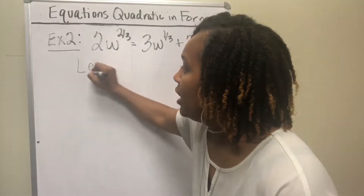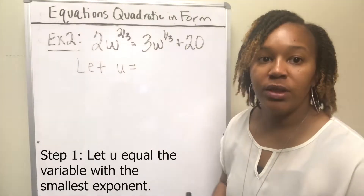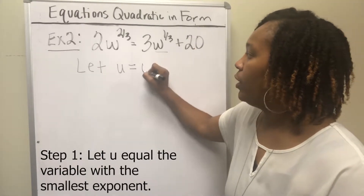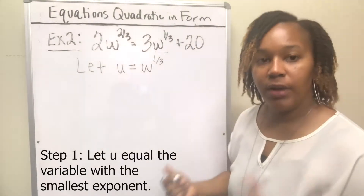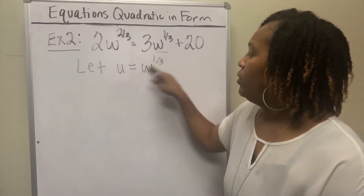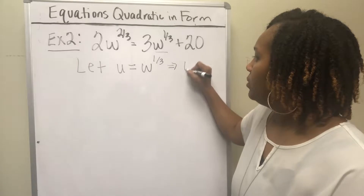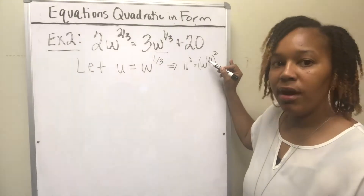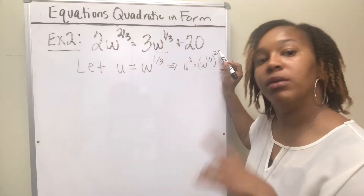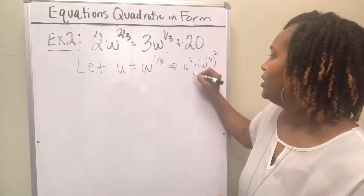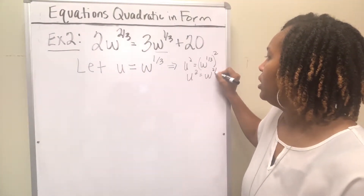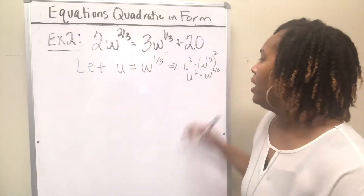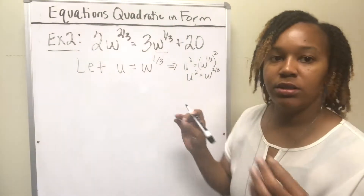This time you let u equal the variable with the smallest exponent, which is going to be w^(1/3). So if u = w^(1/3) and if we square both sides, we get (w^(1/3))² = w^(2/3), because whenever you have a variable raised to an exponent raised to another exponent, you multiply the exponents. So u² = w^(2/3). I'm showing you this so that you know how to substitute u into the equation.